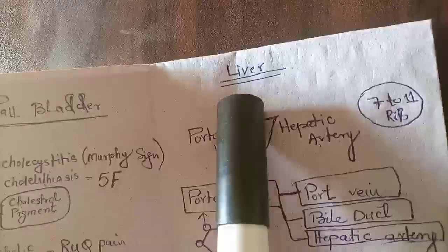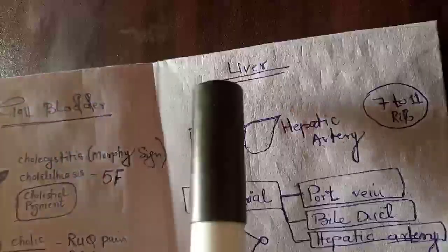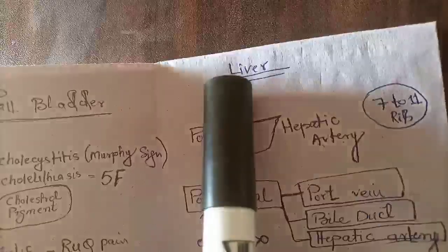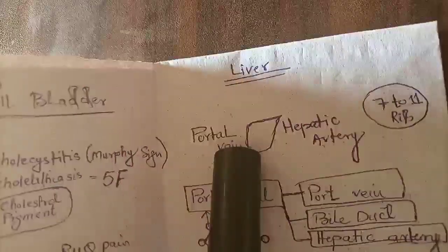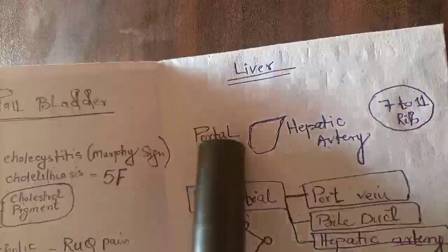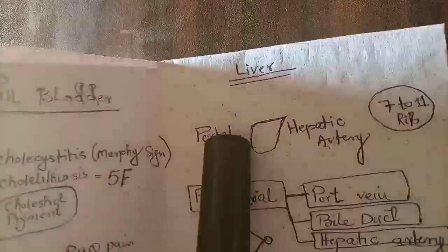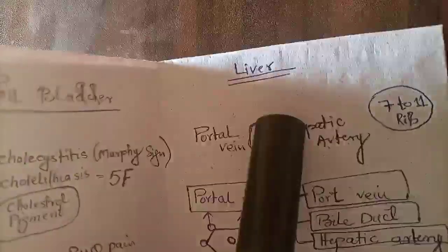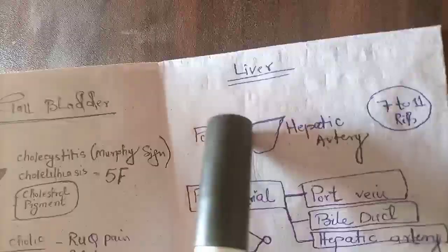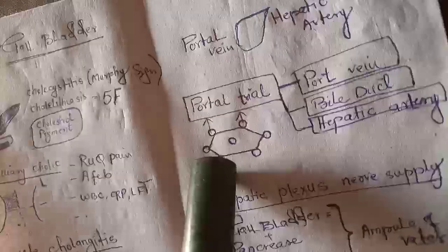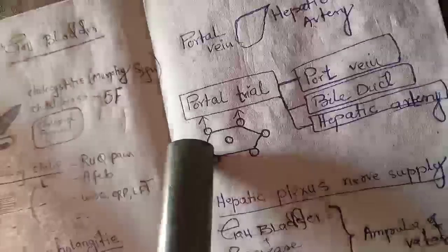Welcome everyone. Now we will be looking at anatomy and physiology of liver. So liver is the largest internal organ of the body. It has two types of blood supply and blood drainage. Hepatic artery supplies the blood and portal vein drains blood from the liver.